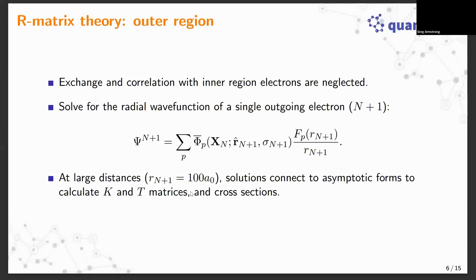In the outer region, exchange and correlation are neglected and you're solving for a single outgoing electron wave function. The N+1 electron wave function is expanded in this form where you have a radial wave function for electron N+1 to solve for. At large distances, these solutions are connected to asymptotic forms from which you calculate K and T matrices which are then used to construct cross sections.